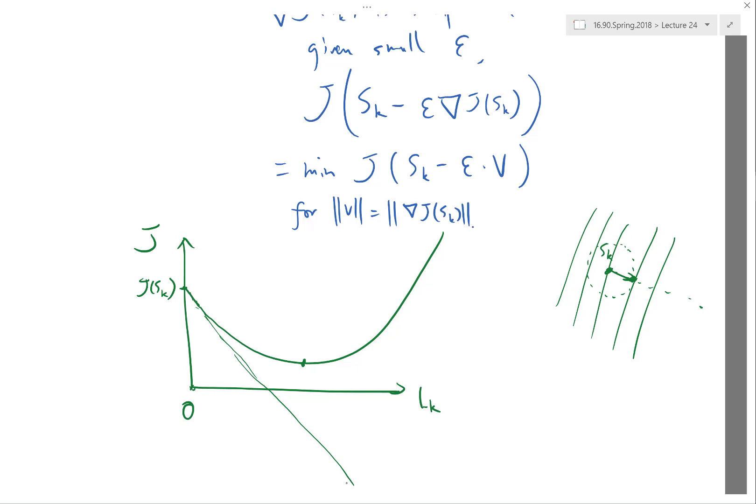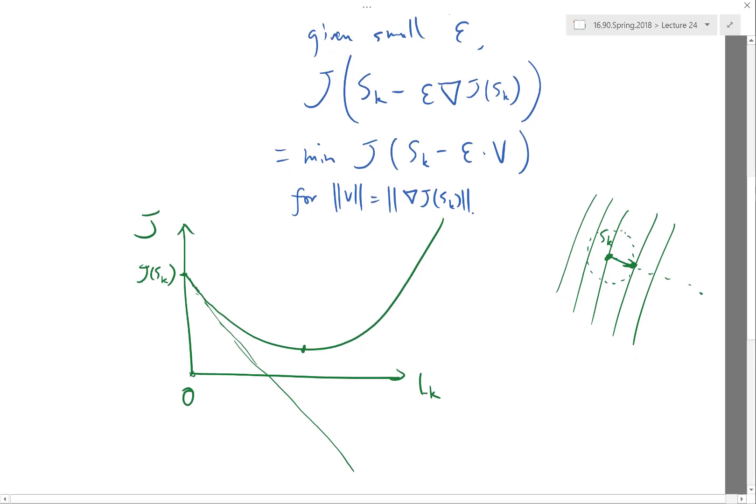So for example, if you do steepest descent, one of these algorithms is to actually determine the step size by performing a line search in the space of L_k. The line search basically is a method of one-dimensional optimization that minimizes the function over this one particular direction.